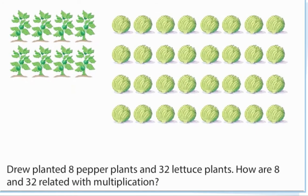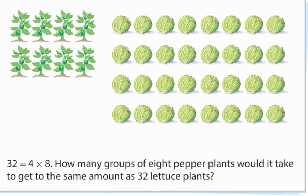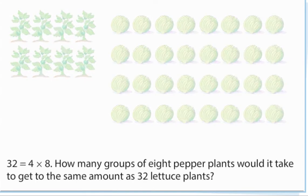Drew planted eight pepper plants and 32 lettuce plants. How are 8 and 32 related with multiplication? 32 equals 4 times 8.